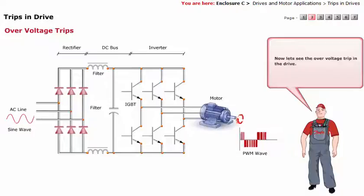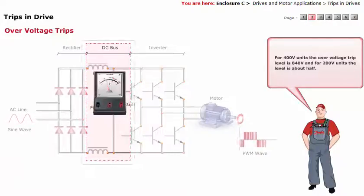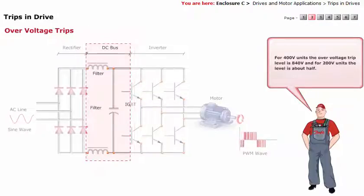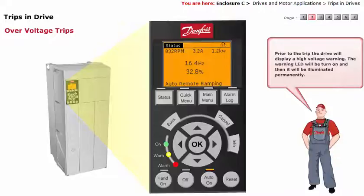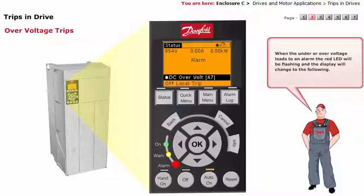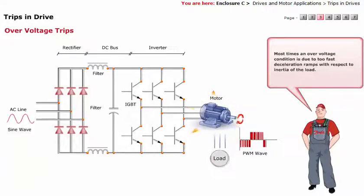Now, let's see the over voltage trip in the drive. For 400 volt units, the over voltage trip level is 840 volts, and for 200 volt units, the level is about half. Prior to the trip, the drive will display a high voltage warning. The warning LED will be turned on and then illuminated permanently. When the under or over voltage leads to an alarm, the red LED will be flashing and the display will change accordingly. Most times, an over voltage condition is due to too fast deceleration ramps with respect to the inertia of the load. During deceleration of the load, the inertia of the system acts to sustain the running speed.